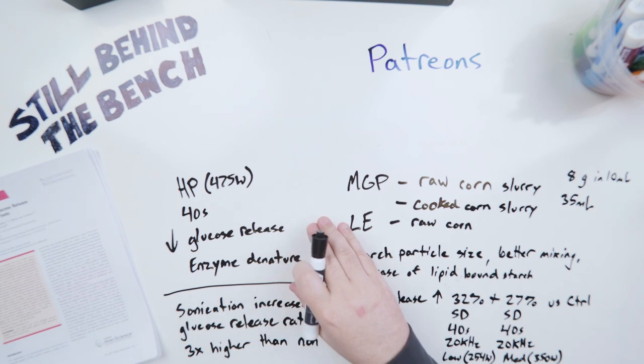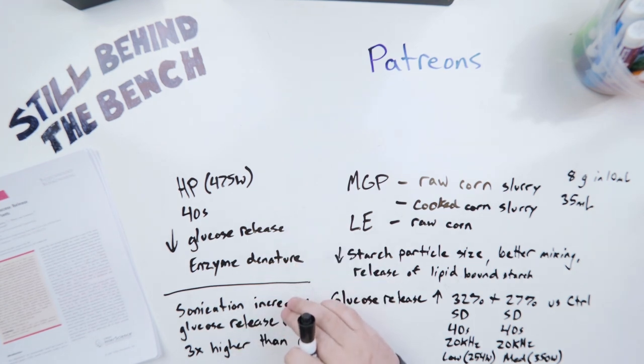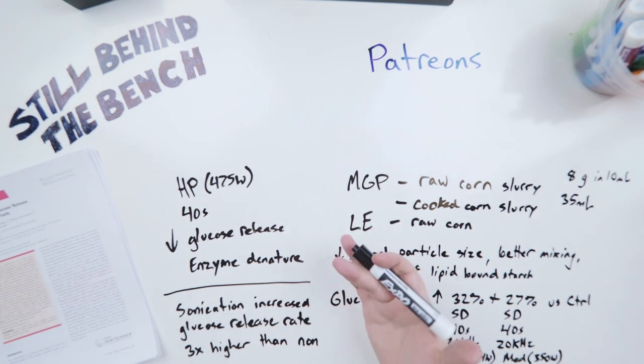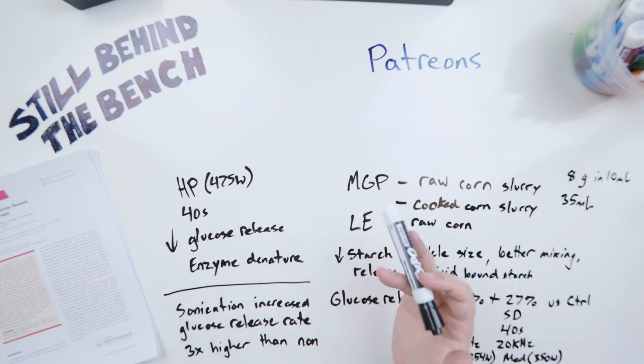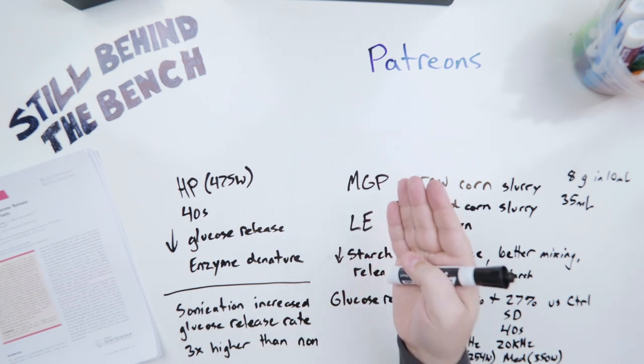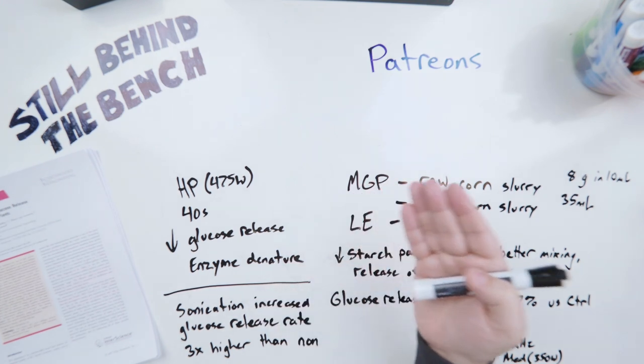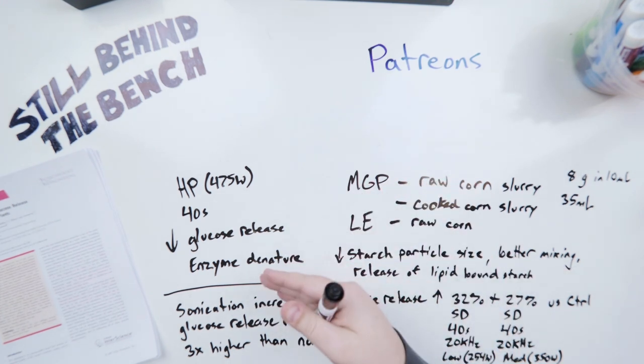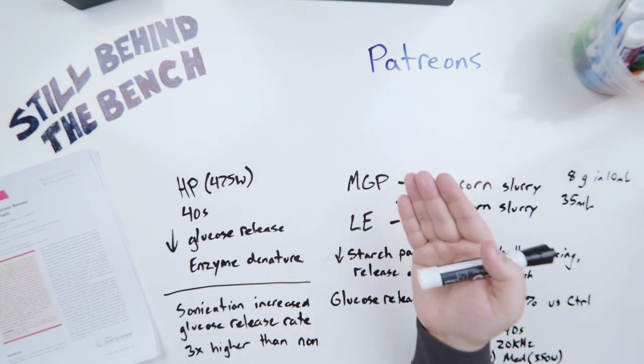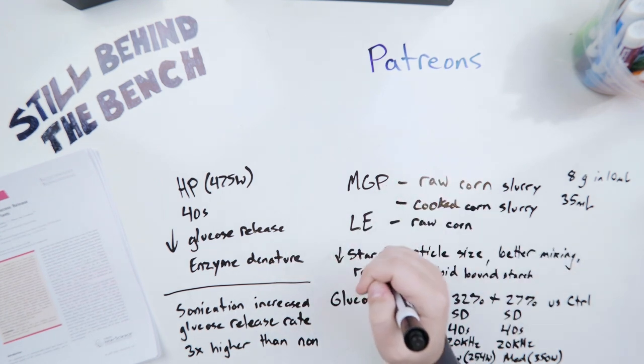The last thing I want to talk about about this first study is that they showed that sonication increased glucose release rate three times higher than non-sonicated corn. So what that means is that say it normally takes you 90 minutes to mash this would take you 30 minutes. If it normally takes you 60 minutes to mash this would probably take you about 20 minutes. Pretty good shortening of time especially if you're doing this commercially. So let's take a look at the second study.